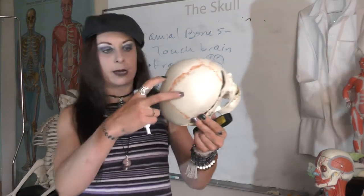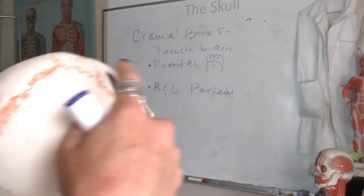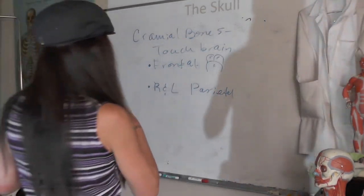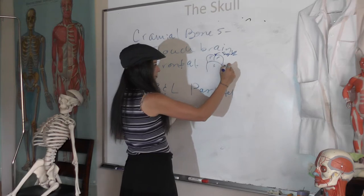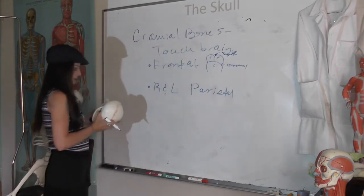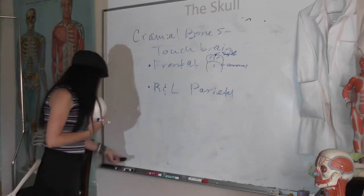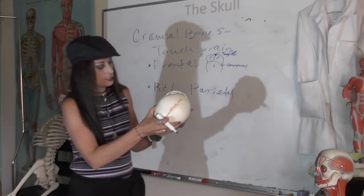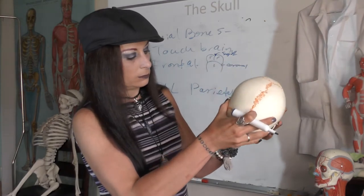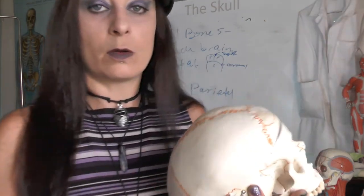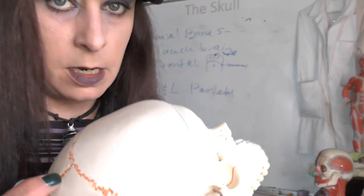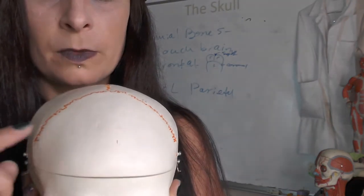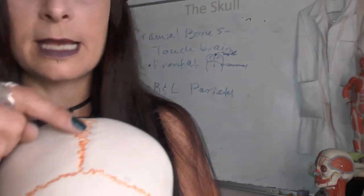We can see our parietal bones here; these are connected to each other by the sagittal suture — this line right here. And this one right there is the coronal suture. Then underneath each of our parietal bones, we have temporal bones. Frontal bone, coronal suture, left and right parietal bones, sagittal suture.